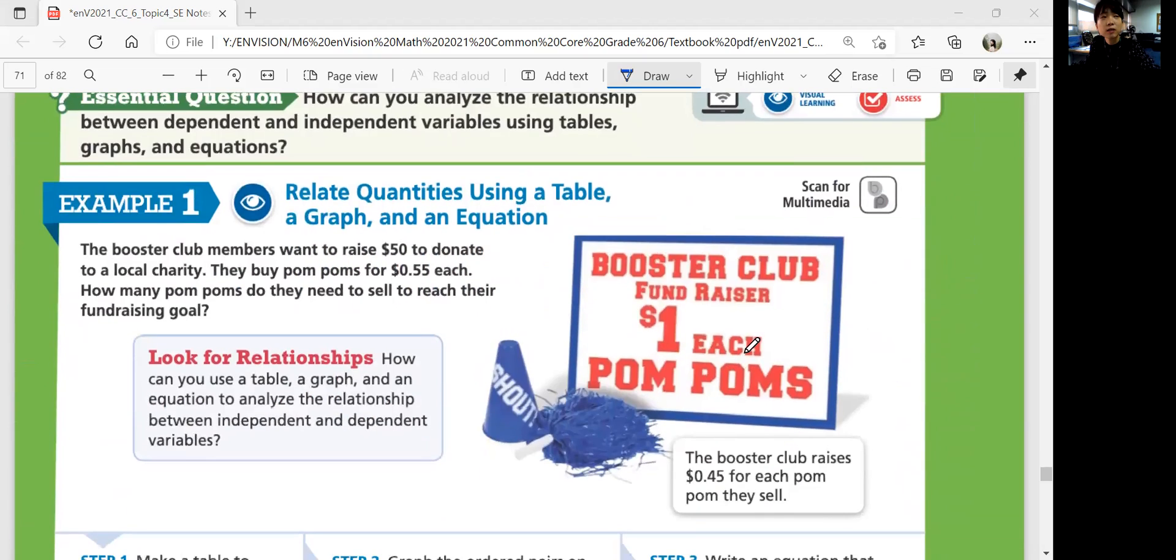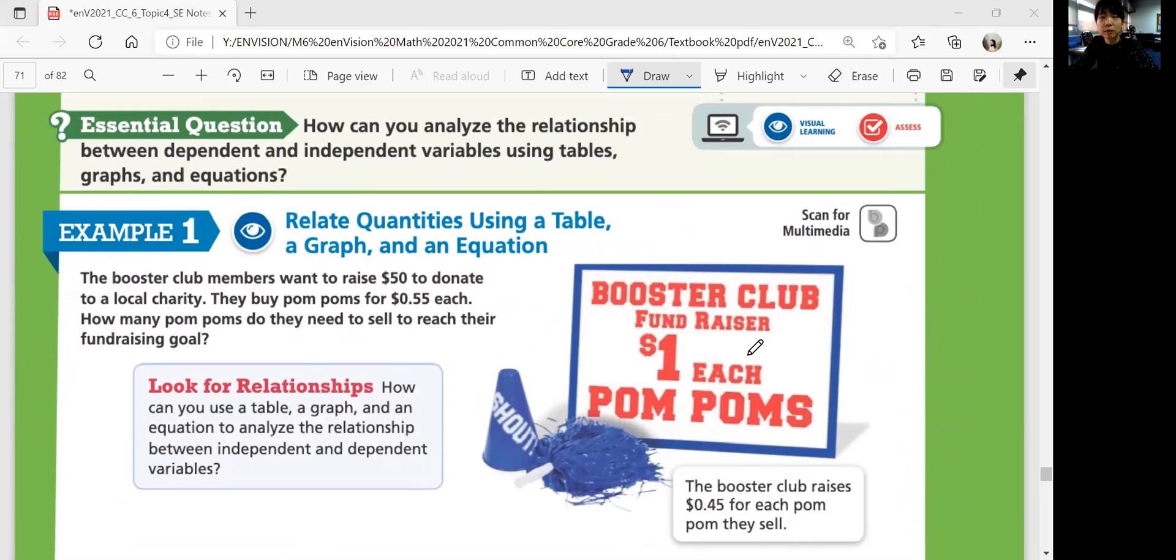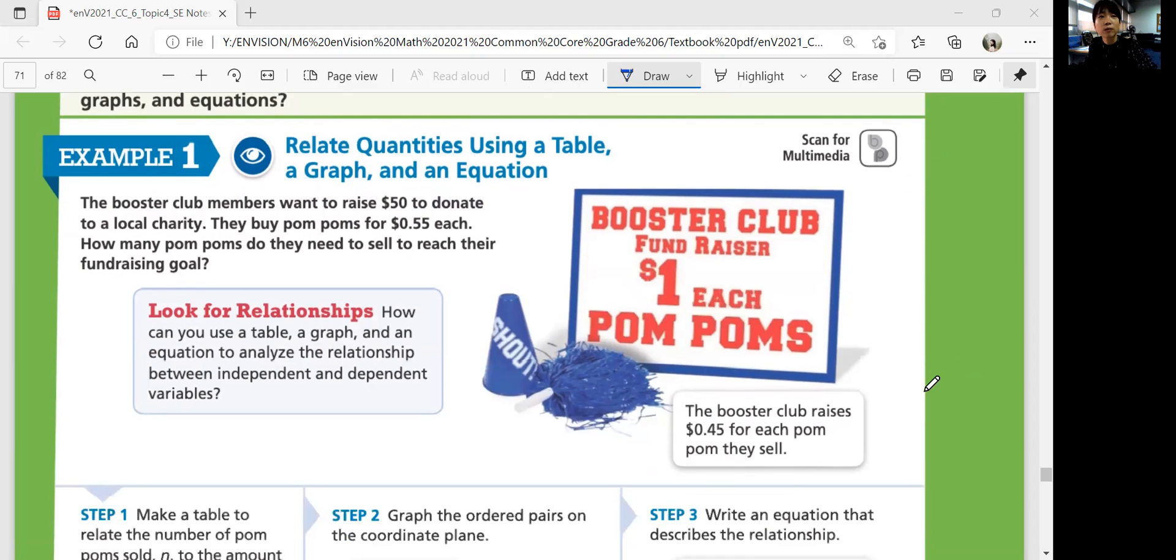Let's think about the essential question. How can you analyze the relationship between dependent and independent variables using tables, graphs, and equations? We're going to look at graphs and tables today as well. Example one: Relate quantities using a table, a graph, and an equation. The Booster Club members want to raise $50 to donate to a local charity. They buy pom-poms for $0.55 each. How many pom-poms do they need to sell to reach their fundraising goal? The Booster Club raises $0.45 for each pom-pom they sell. Every pom-pom they sell, they earn $0.45.